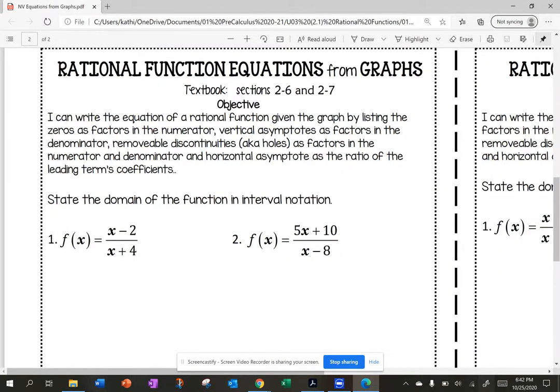My learning target for today is I can write the equation of a rational function given the graph by listing the zeros as factors in the numerator, vertical asymptotes as factors in the denominator, removable discontinuities, also known as holes, as factors in the numerator and denominator, and a horizontal asymptote as the ratio of the leading term's coefficients.